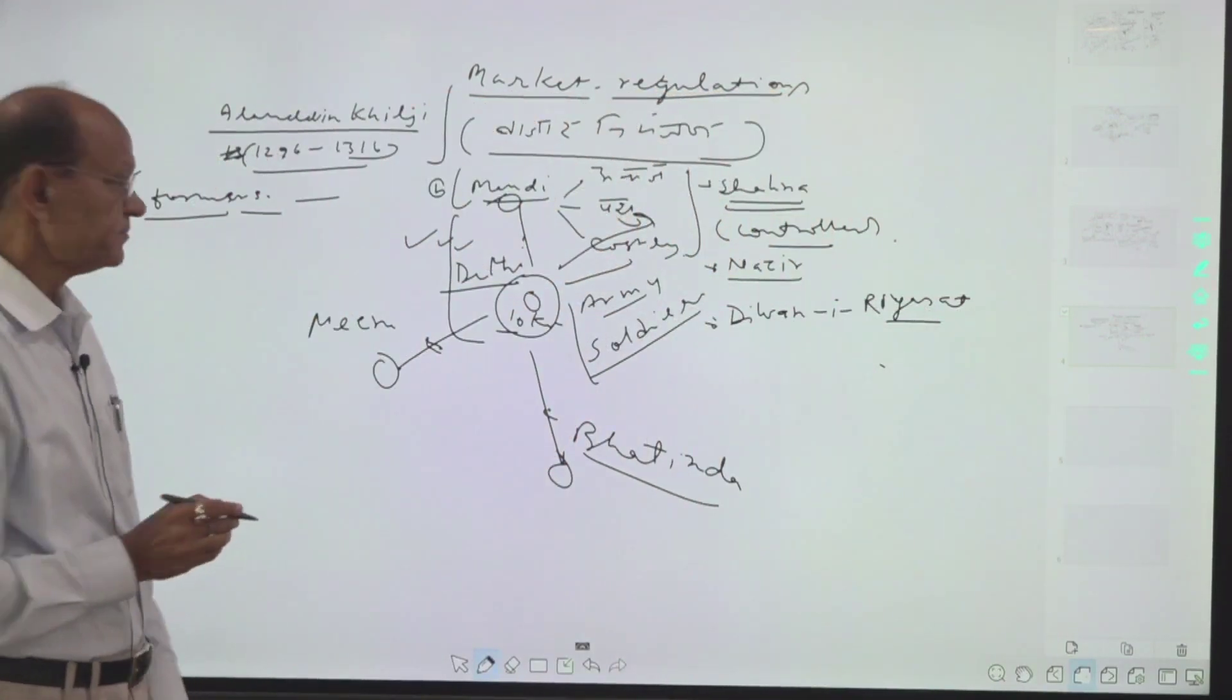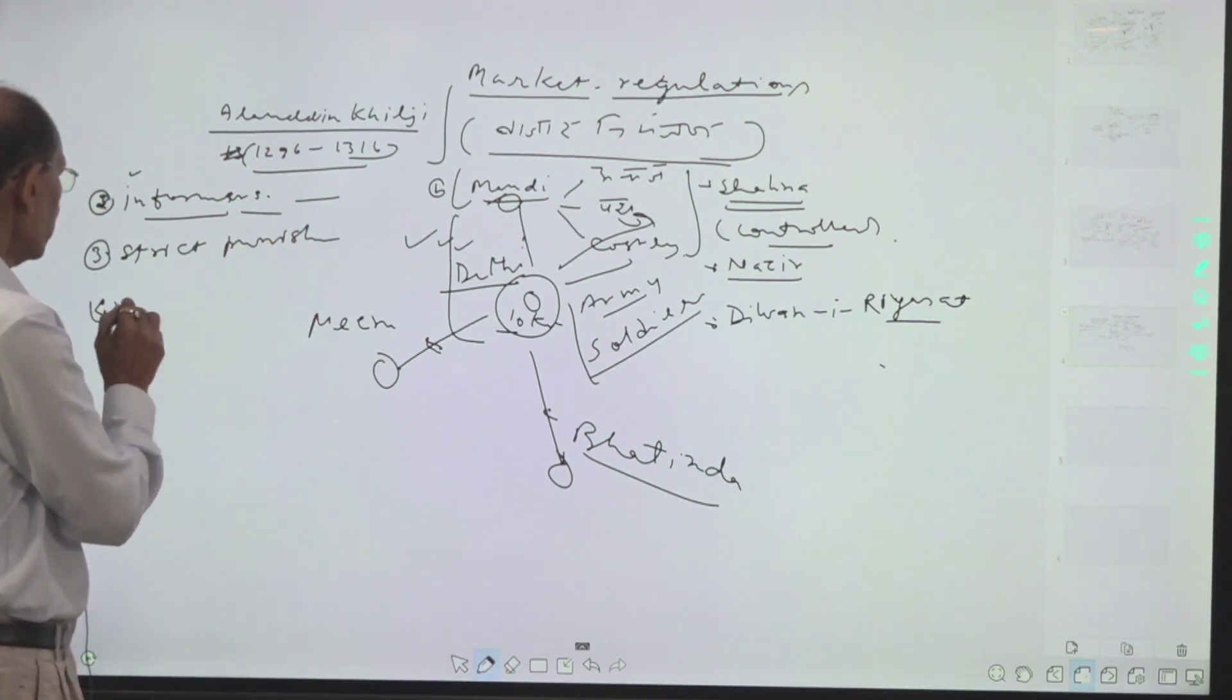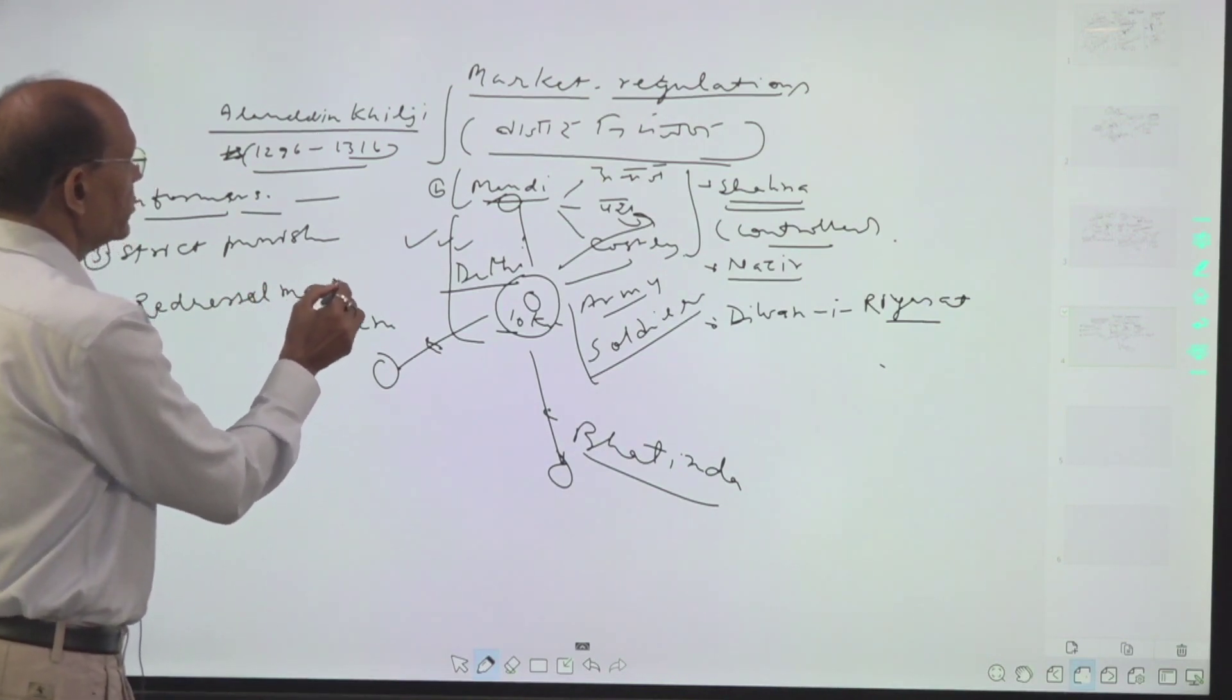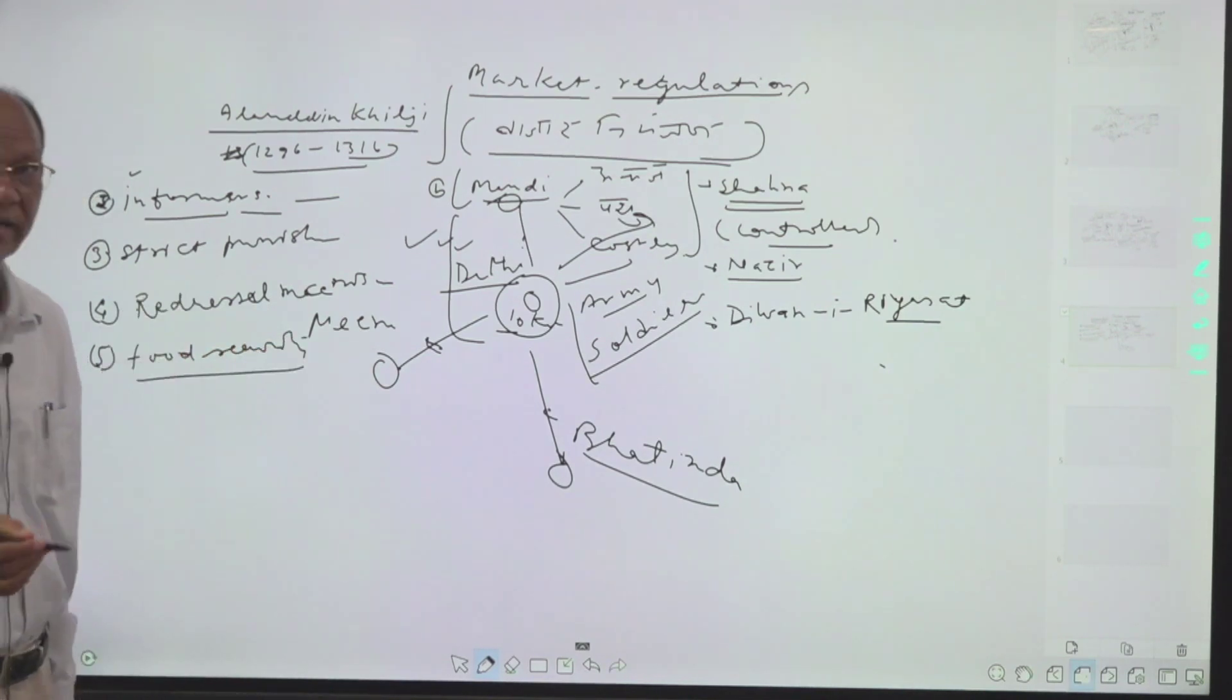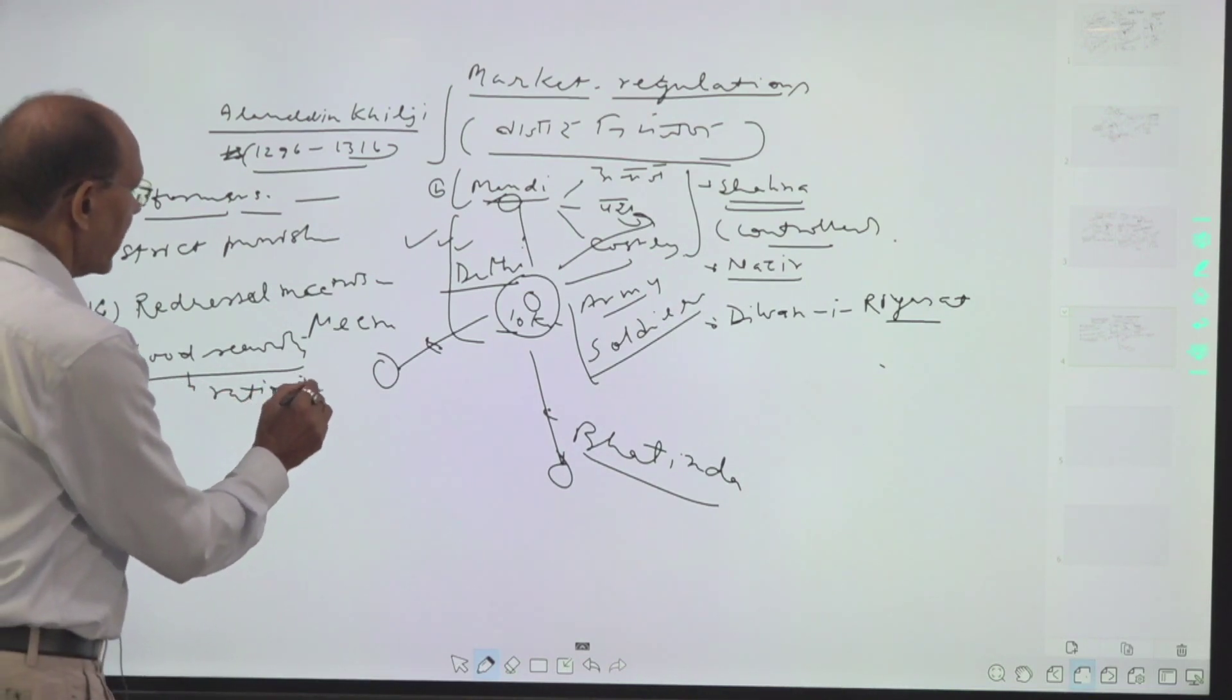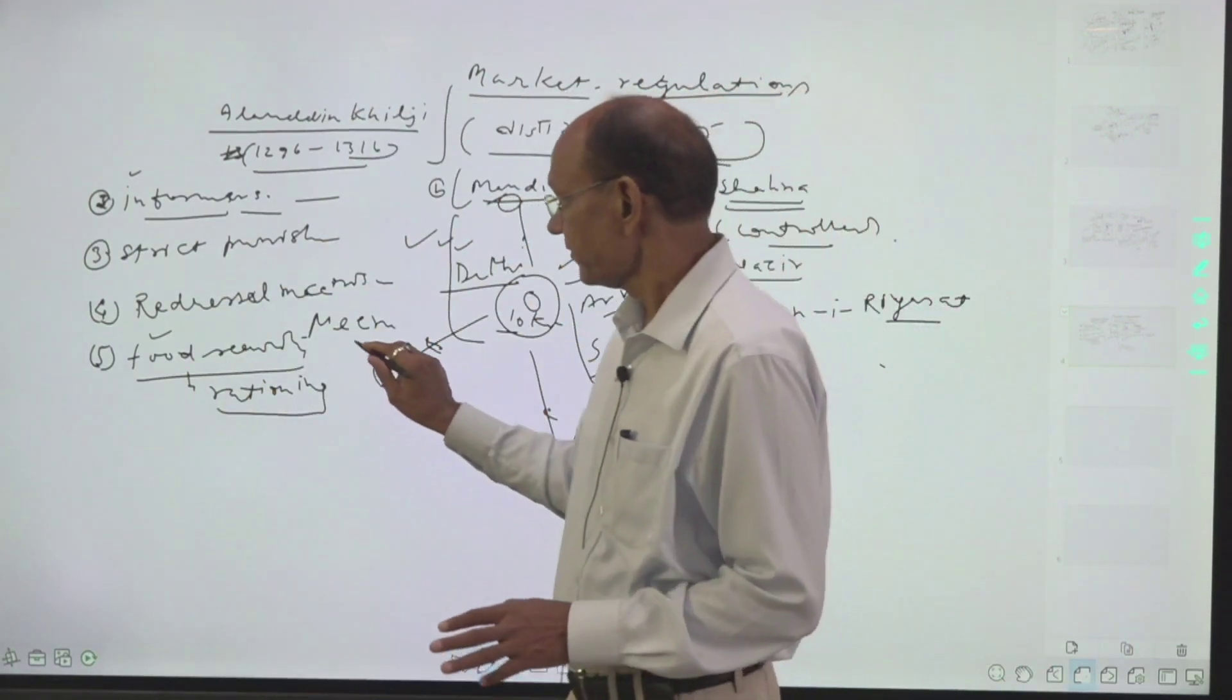Informers were made. There was a strict punishment system, court system, grievance redressal mechanism, storage facility, food security. Grain was available in the form of rationing. At the time of famines, at the time of short supply of grains, every family would get 20 shares of grain.